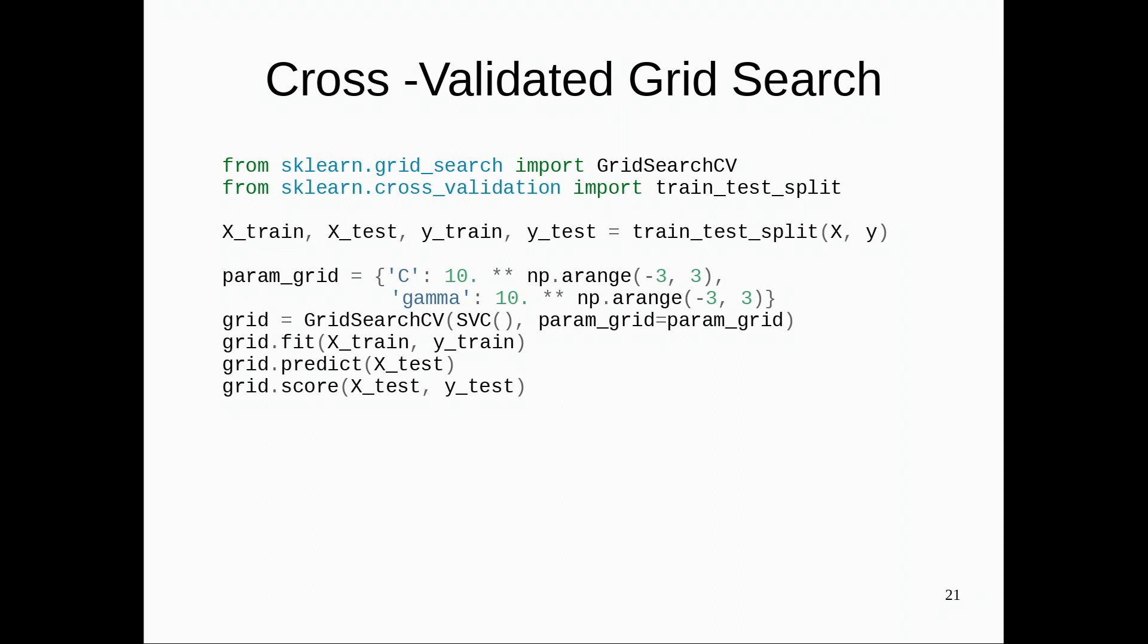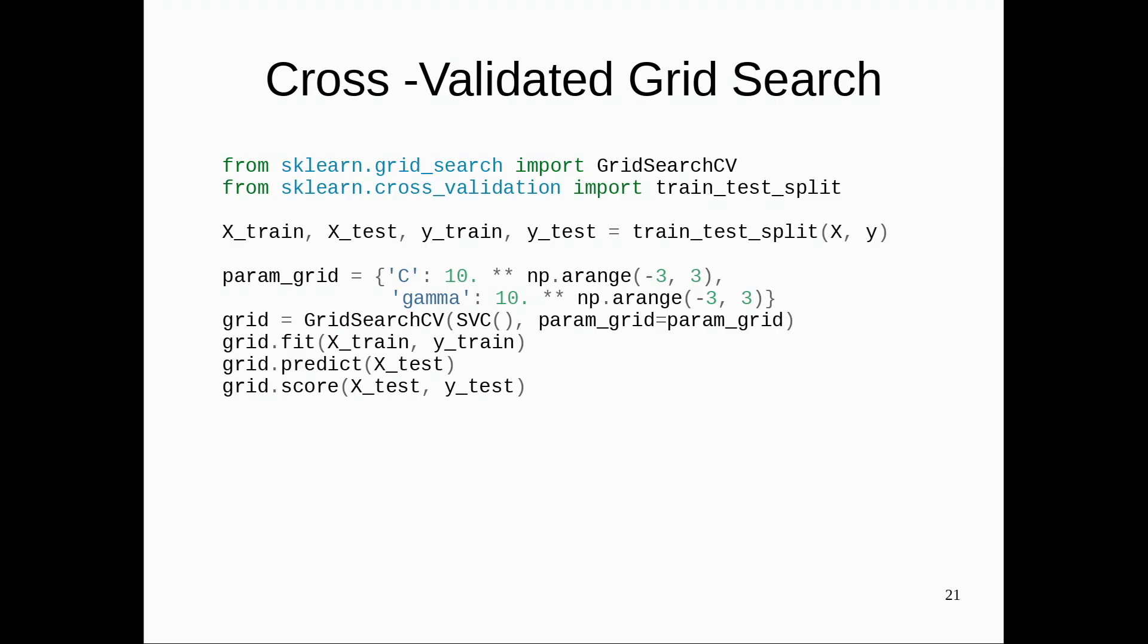Then to actually do the search, I instantiate a new object with GridSearchCV. And it gets the model I want to tune and the parameter grid. I can also specify which metric to use, like if I want to use AUC or accuracy or average precision, whatever you want, and how I want to do cross-validation.